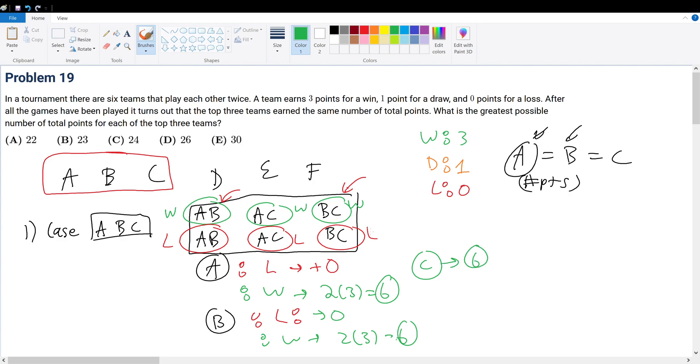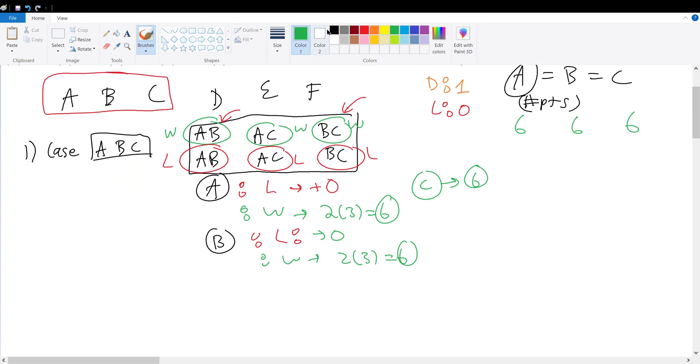So we notice that this is the only possible distribution of game wins in order to allow each team to have two wins, and therefore have six points total distributed amongst themselves. So for now, each team has six points. But what about case two? Case two is where we consider the case of the games where A, B, and C play against D, E, and F. Now, we want to maximize the number of points.